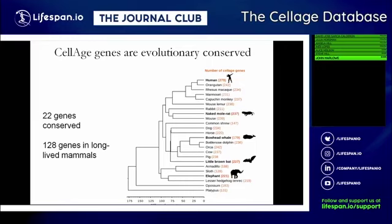We also looked into genes conserved across larger groups of species. Of the 279 genes, they tend to be well conserved — there are 22 genes conserved across all mammals we tested, though genome quality issues may cause some to be missed. There were also 128 genes associated with cell senescence present in long-lived species like humans, naked mole rats, whales, bats, and elephants. So there tends to be quite strong conservation of these genes.